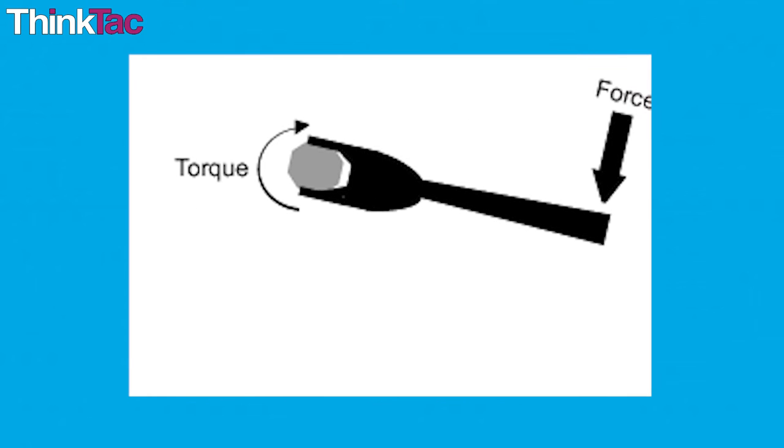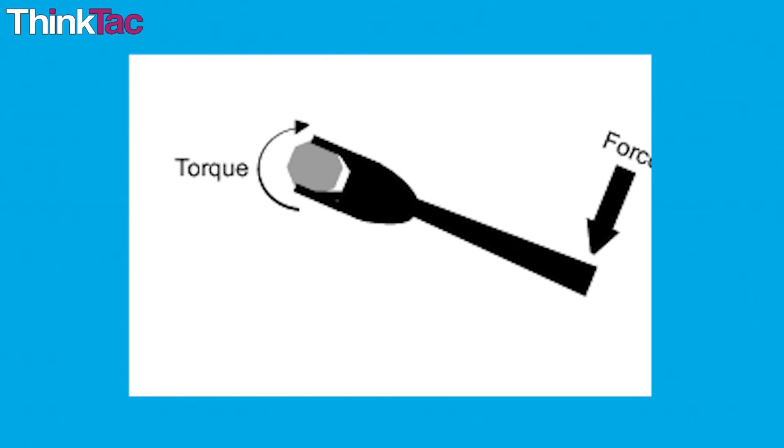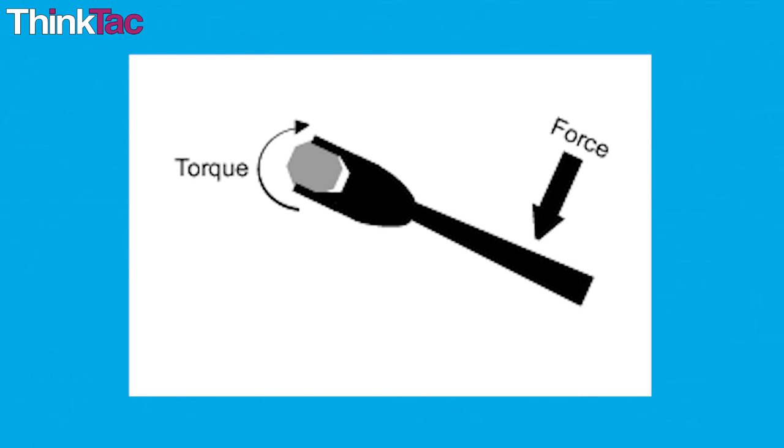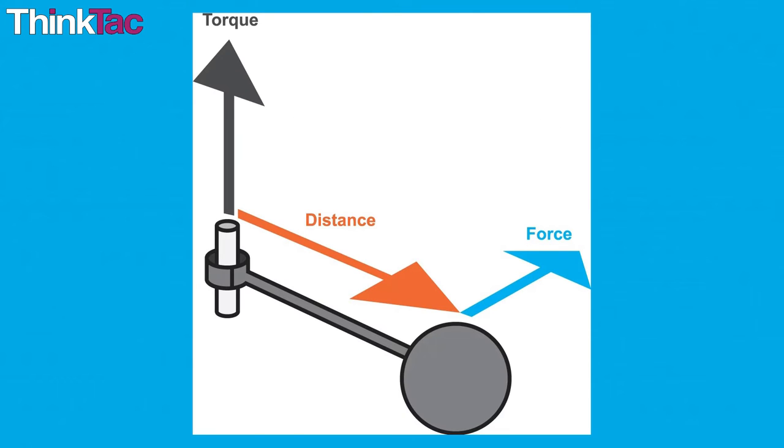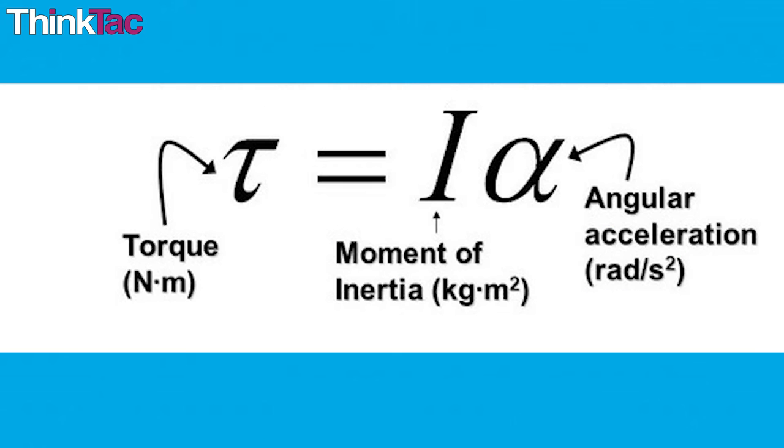Torque. This is the corollary of force in the linear space. It is a torque that causes rotational motion, often simply termed a moment. Mathematically, it is a product of the force applied to the perpendicular distance. It is also the product of the moment of inertia of an object and its angular acceleration.